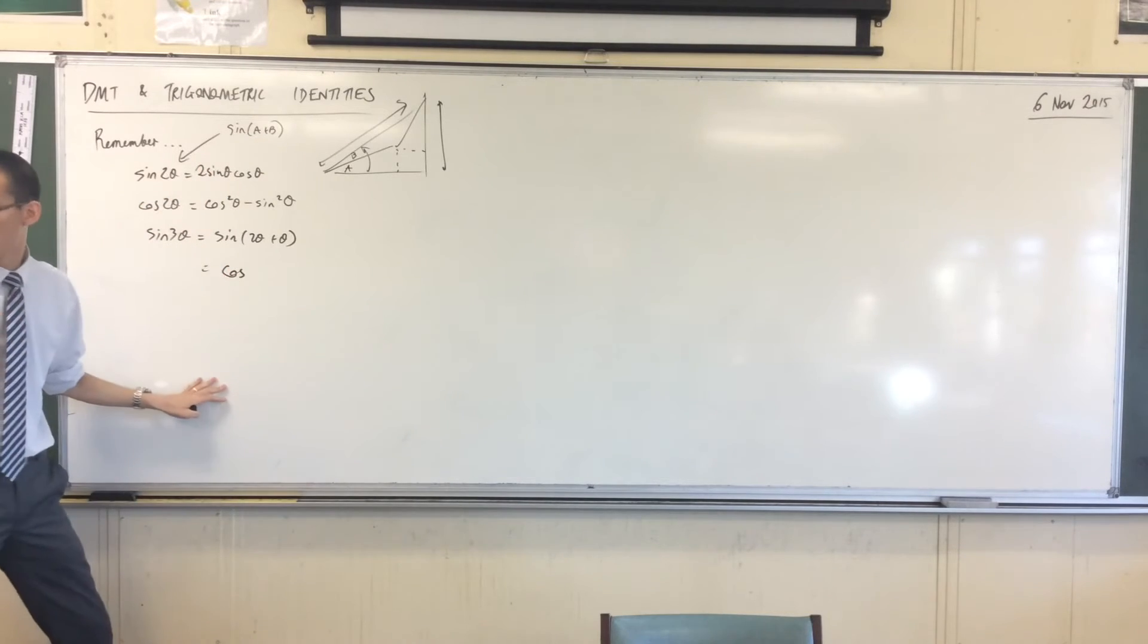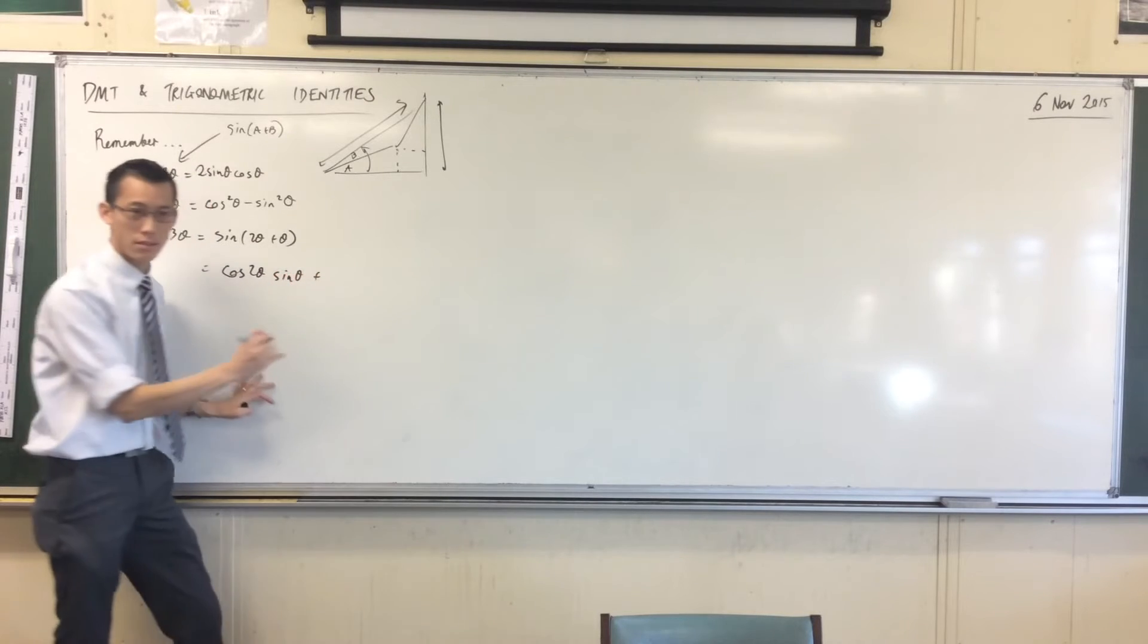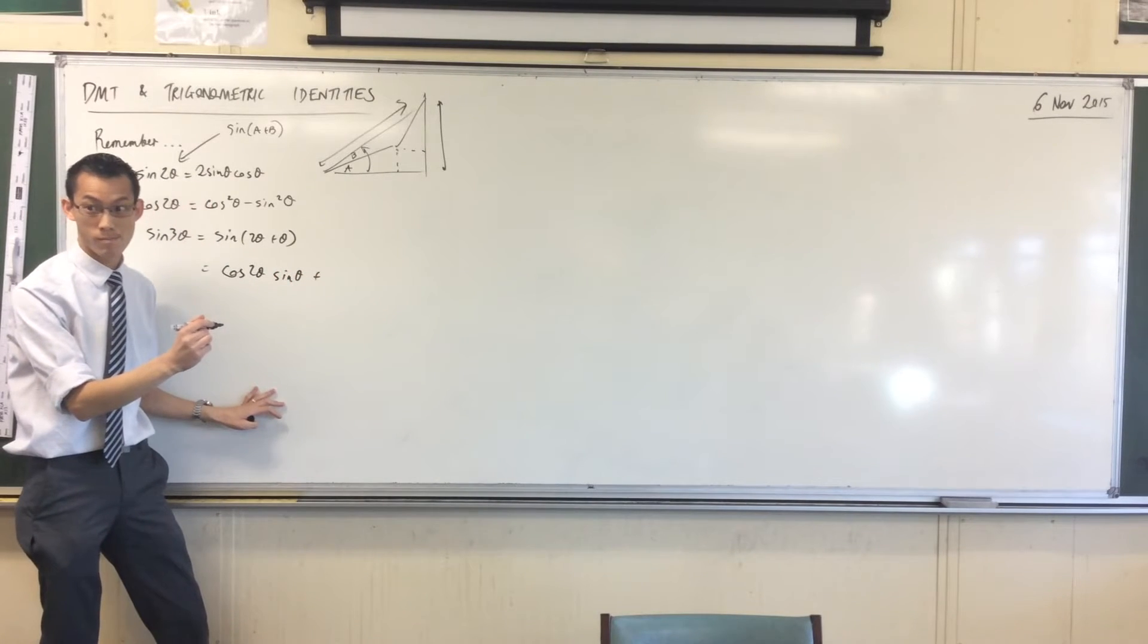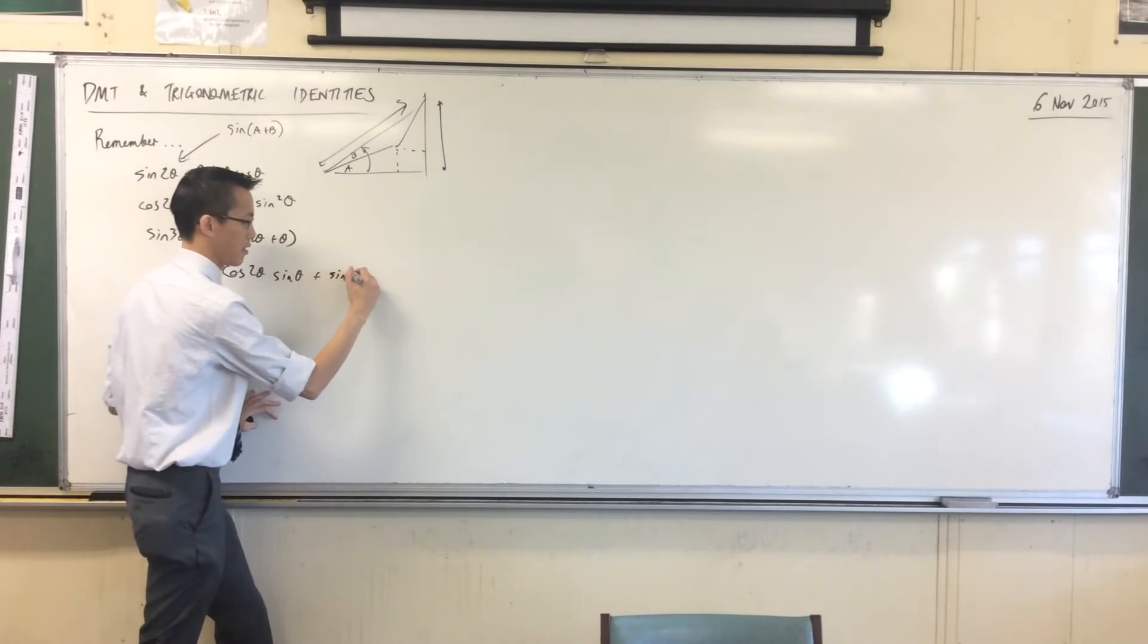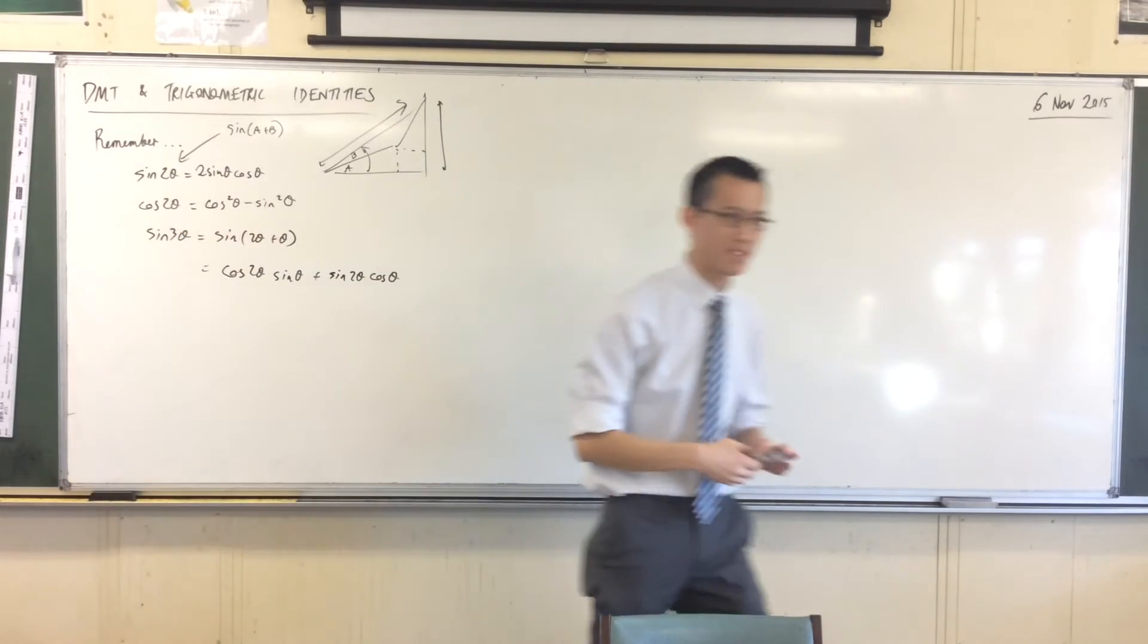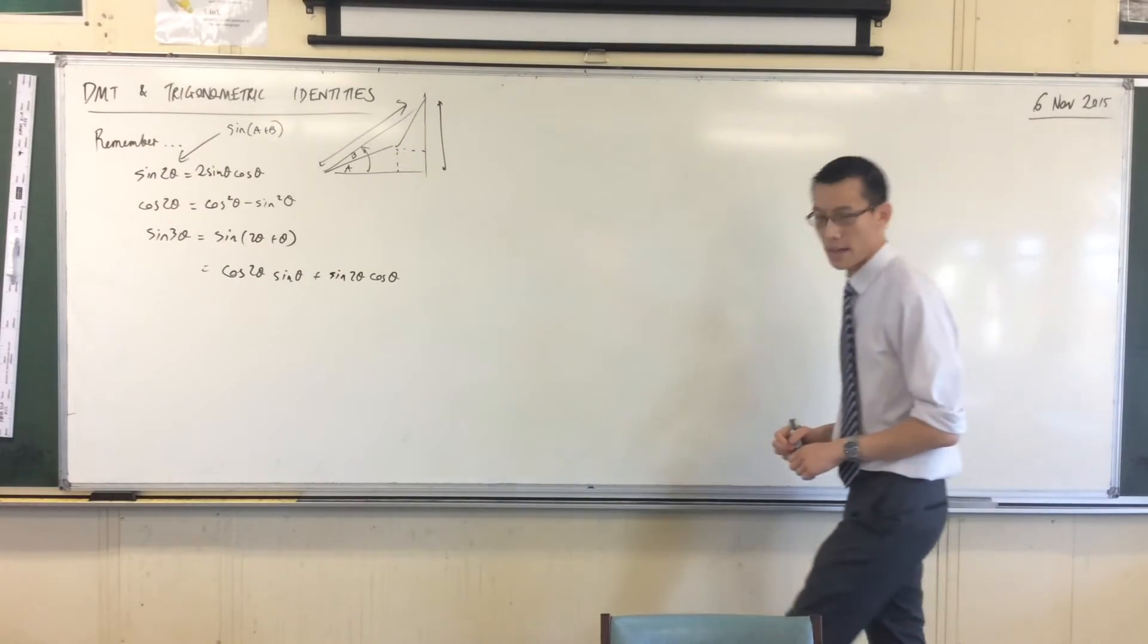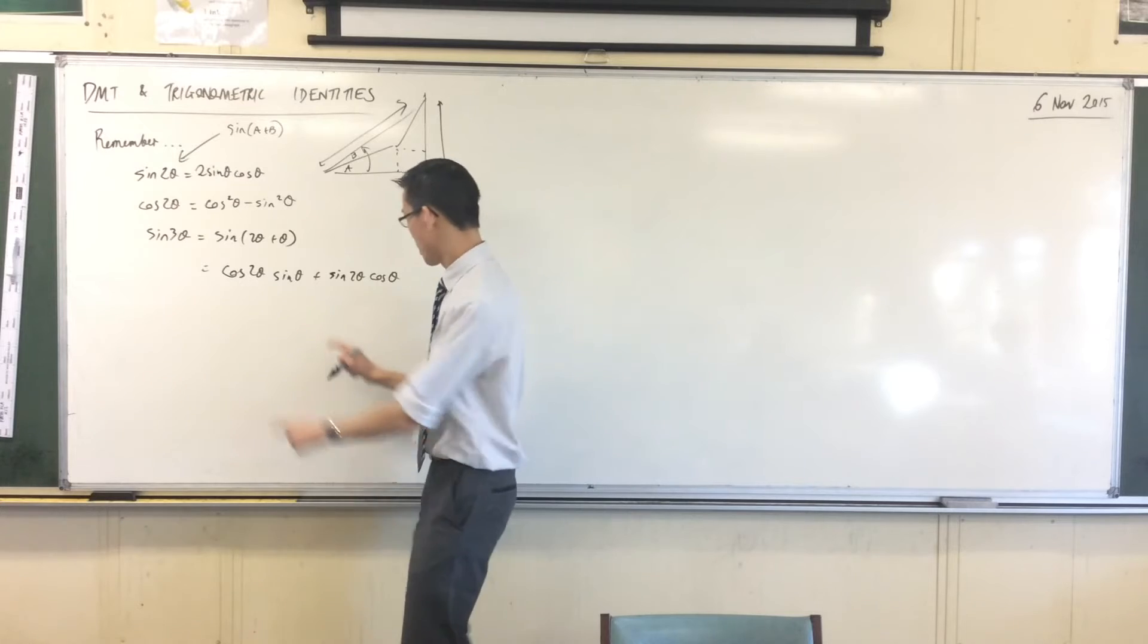Cos 2 theta, sine theta, very good, plus sine 2 theta cos theta. Okay, now, that's true, but it's not particularly simple. What else could I do from here? Where else could I go? Expand it to sine cos 2 theta.